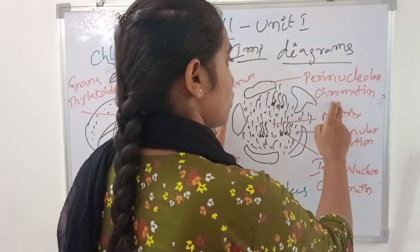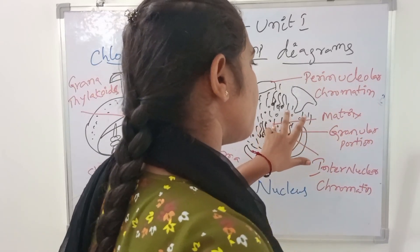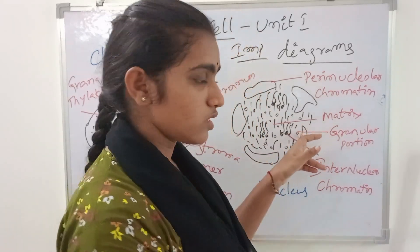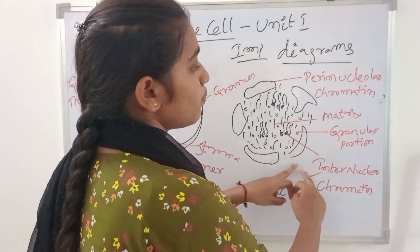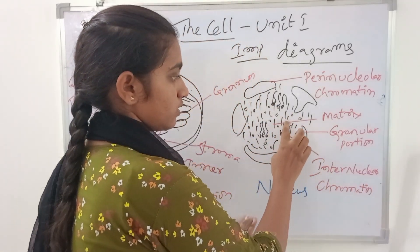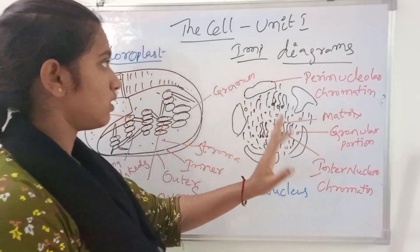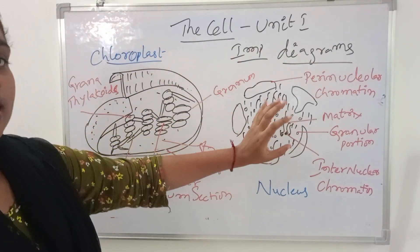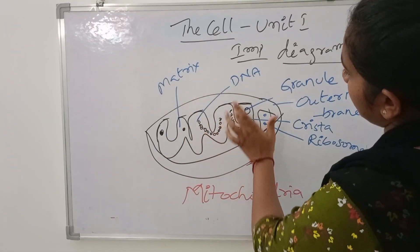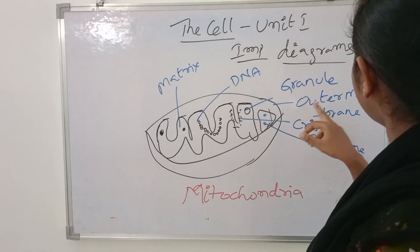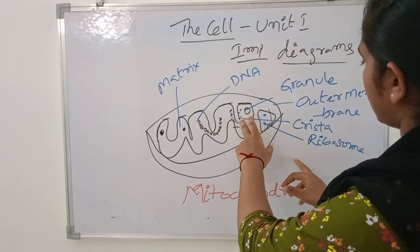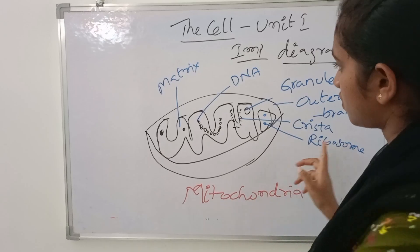This is the nucleus. This is the mitochondria structure — this is the matrix, this is DNA, this is the cristae, this is the outer membrane, and this is the ribosome. This is the mitochondria.